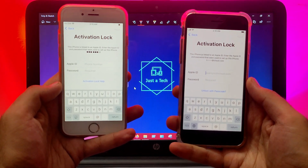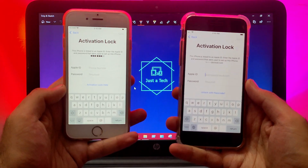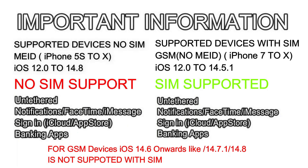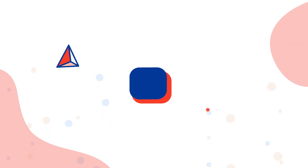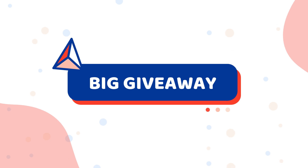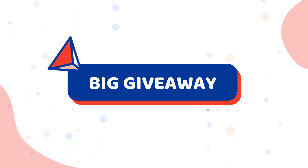The important point before using the tool: if you are on iOS 12 to the latest iOS 14.8 on a MEID device like iPhone 5s to iPhone X, there is no SIM support, but you will get untethered bypass, notifications, FaceTime, iMessage, iCloud sign-in, and all services — excluding SIM support. But if you are on a GSM device like iPhone 7, 7 Plus, 8, 8 Plus, and X on iOS 12 to 14.5.1, you will get SIM support with untethered bypass, notifications, FaceTime, iCloud sign-in, and everything. Keep all these things in mind before using the tool, and I've also hosted a big giveaway — watch the video till the end to know more.